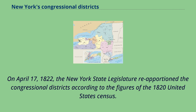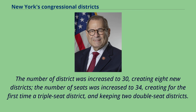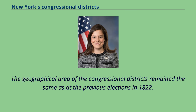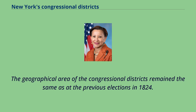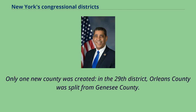On April 17, 1822, the New York State Legislature reapportioned the congressional districts according to the figures of the 1820 United States Census. The number of districts was increased to 30, creating eight new districts; the number of seats was increased to 34, creating for the first time a triple-seat district and keeping two double-seat districts. The geographical area of the congressional districts remained the same as at the previous elections in 1822. Two new counties were created within the 26th district: Wayne County and Yates County. The geographical area remained the same as at the previous elections in 1824. Only one new county was created — in the 29th district, Orleans County was split from Genesee County.